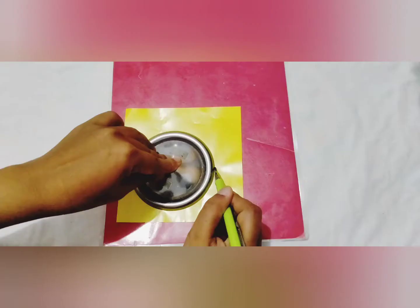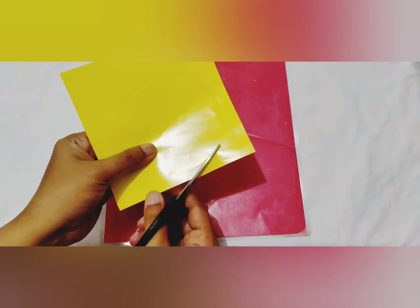Then, draw a circle using the bigger lid of the cup on the colored paper. If you don't have colored paper, you just do it on the blank paper. Then you color it with a different color that you have used to color the circle. After that, you cut it.